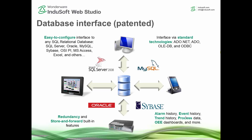The alarm object, event object, trend, process history, grid object, and similar features don't require you to know SQL — you just point them to which database, table, and field you want, and the system will automatically create the table and even the database if needed. Built-in redundancy and store-and-forward features are again often just a checkbox — set up where the secondary database is and away you go.